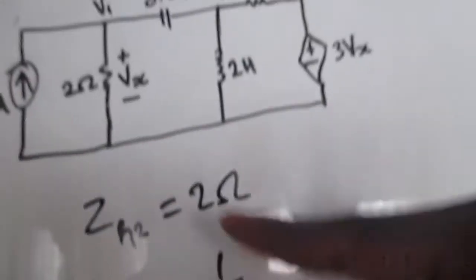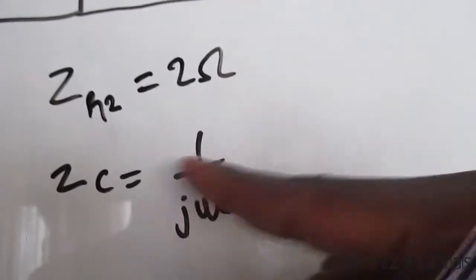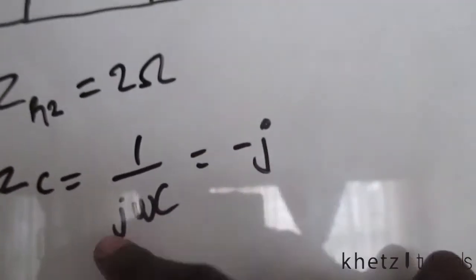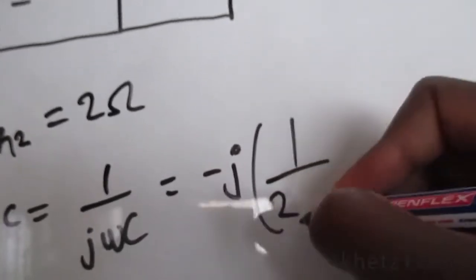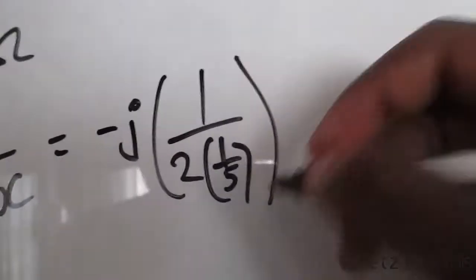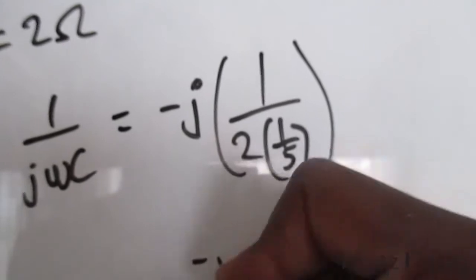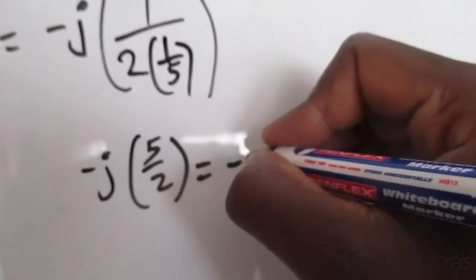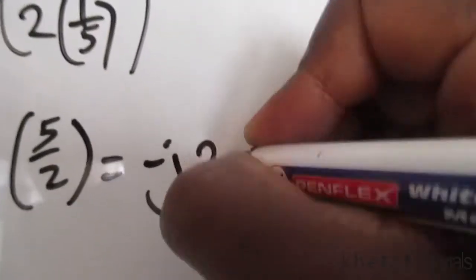We substitute the raw capacitance value C = 0.2, which equals 1/5. So we have 1 over j multiplied by 1/(2 × 0.2). Since 1/j equals −j, and 2 × 0.2 = 2/5, we get −j multiplied by 5/2, which equals −j2.5. So the impedance of this capacitor is −j2.5 ohms.